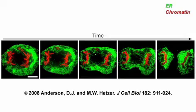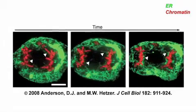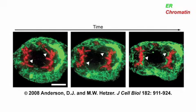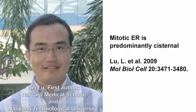The nuclear envelope has been proposed to reassemble through the fusion of ER tubules around the chromosomes. But this didn't fit with observations made in 2009 by Kirchhausen's postdoc Lei Lu using rapid live cell 3D imaging. They found that mitotic ER is predominantly sheet or cisternal rather than tubular, suggesting that sheet-like or cisternal-like ER membrane provides nuclear envelope formation.